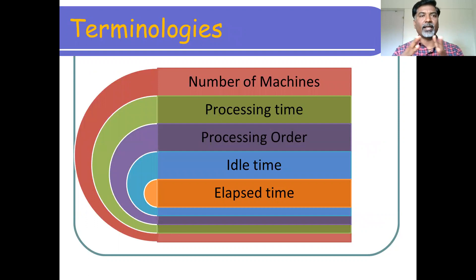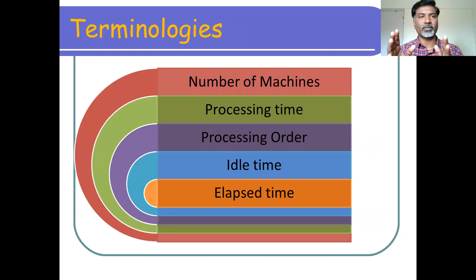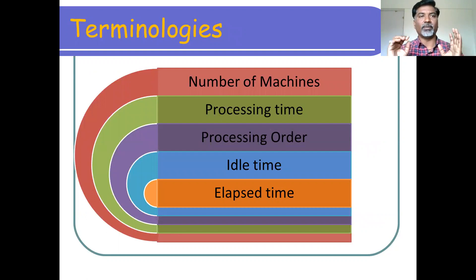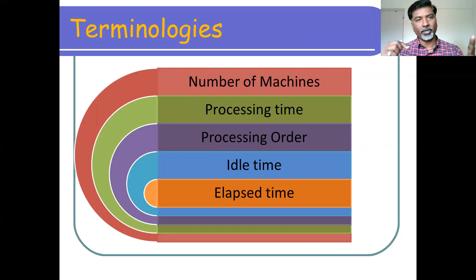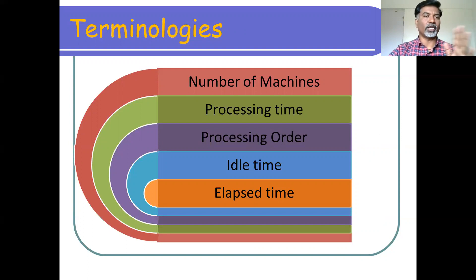The third terminology is idle time, which is the free time for a machine. When the machine is processing n jobs, whether some machines remain idle or not is identified using idle time. The last terminology is elapsed time — when you start the first job and complete the last job, the time duration between starting and finishing all jobs is called elapsed time. These are the basic terminologies you should be familiar with so that further discussion will be easier to understand.